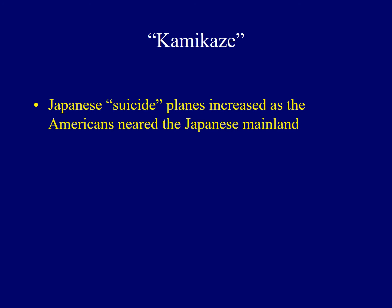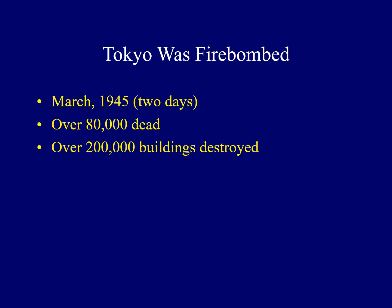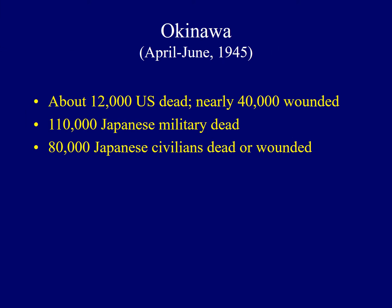As the Americans drew closer to the Japanese mainland, the number of kamikaze attacks — suicide missions — increased dramatically. The city of Tokyo was firebombed over two days in March of 1945, leaving over 80,000 people dead, primarily civilians, and destroying over 200,000 buildings across a 16-square-mile stretch of the city. Yet the Japanese continued to fight. Fighting in Okinawa, only 350 miles from Japan, was even bloodier — about 12,000 American soldiers died and 40,000 were wounded, compared to 110,000 Japanese military dead and about 80,000 Japanese civilians killed or wounded. Yet the Japanese continued to fight on.